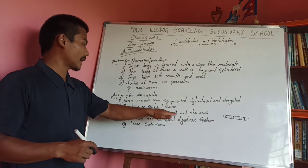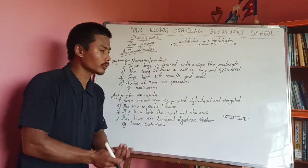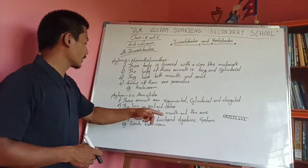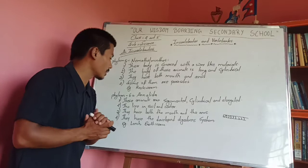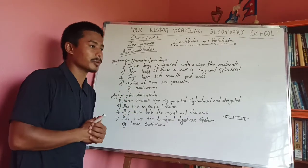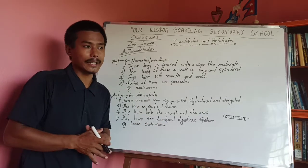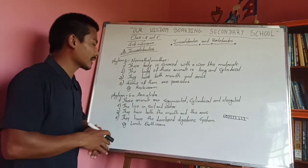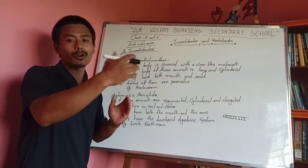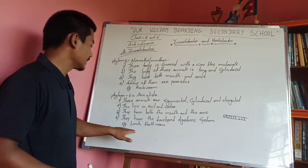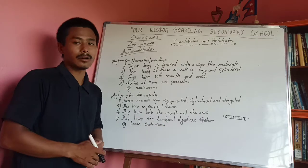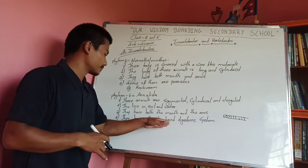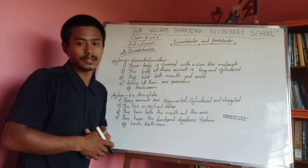Annelids have both a mouth and an anus. They live in soil and water. These animals have a well-developed digestive system.